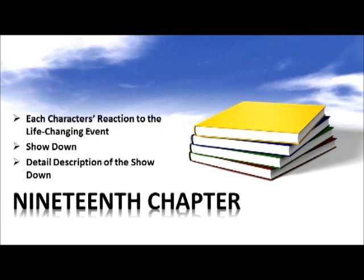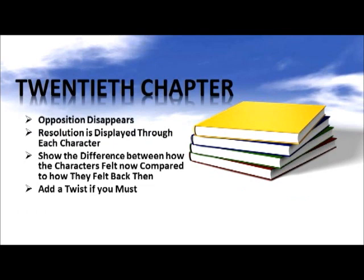Nineteenth chapter: write how each character reacts to this life-changing pivotal moment. Bring every character in that will play a part at the showdown. Give a detailed description of how the showdown unfolds. The opposition disappears and the characters act out the resolution to the plot and all the subplots. The gloom and doom is mentioned again to take the characters into describing how they feel now compared to how they felt before. Something can also happen at this point to cause the opposition to reoccur.